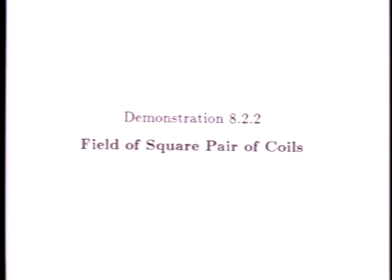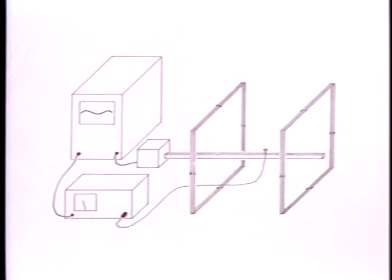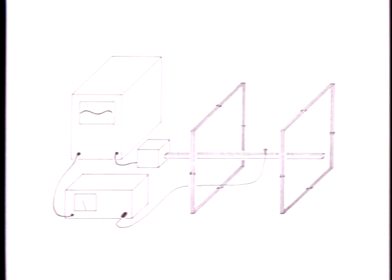The field of a square pair of coils can be found by using the Biot-Savart Law. The pair is often called a Helmholtz coil when the windings are connected so that the currents produce axial fields that reinforce. It can then be used to make a relatively uniform field in the mid-region, which is accessible for experiments.